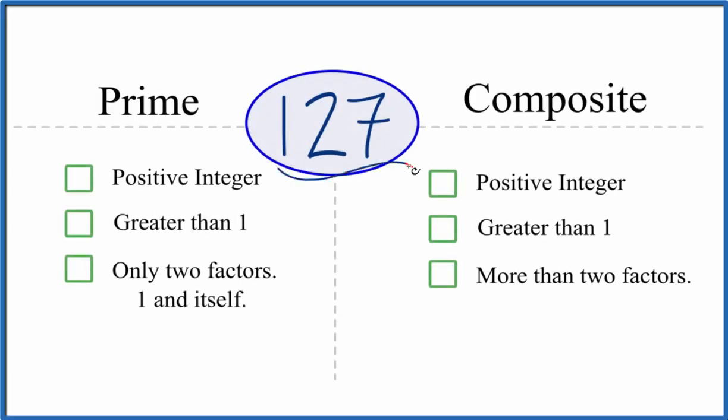Let's look at whether 127 is prime or composite. So first, let's check whether 127 is a prime number. Is it a positive integer? Yeah, it's a positive number, it's a whole number. Is it greater than 1? Yep.